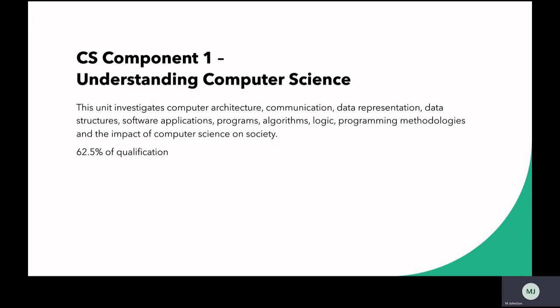In component one, students will learn about computer architecture, communication, data representation, data structures, software applications, programs, algorithms, logic, programming, methodologies, and the impact of computer science on society. This component is worth 62.5% of the qualification, so by the end of year 11 students will have completed nearly two thirds of the course and been assessed externally.